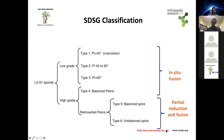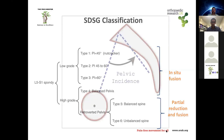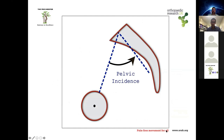The key decision is whether it is a low-grade or high-grade slip, and for high-grade, whether the patient is balanced or not. Pelvic incidence is an important parameter — measured as the angle between a line from the center of the femoral head to the midpoint of the sacrum and a perpendicular line from the sacral midpoint. This is a fixed angle, typically between 50 and 55 degrees, and does not change during a patient's lifetime.